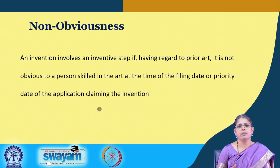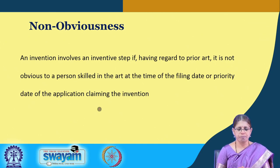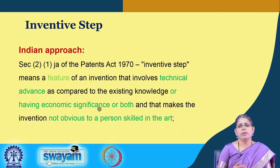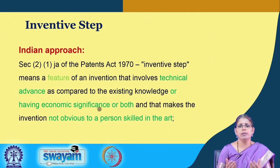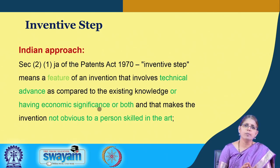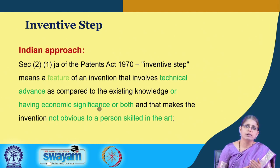There are different factors used for determination of non-obviousness, which have come out from different case laws worldwide. In the case of the Indian Patent Act, inventive step is defined. Inventive step and non-obviousness are used synonymously in some sense — in India we call it inventive step, meaning every invention must have inventiveness. The law defines the inventive step under Section 2(1)(j)(a) of the Indian Patent Act: it means a feature of an invention that involves technical advance as compared to that of the existing knowledge. This is the objective inquiry that must be met.